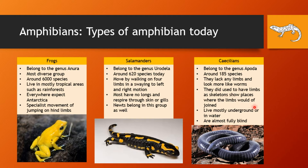The last group are the caecilians, belonging to the genus Apoda, with around 185 species. This group lacks any limbs, although they are seen to have had a common ancestor that did have limbs but evolved to lose them. They mostly live underground and burrow, and because of this they are almost fully blind. This group is the least known species of amphibian and are mostly mistaken for earthworms.